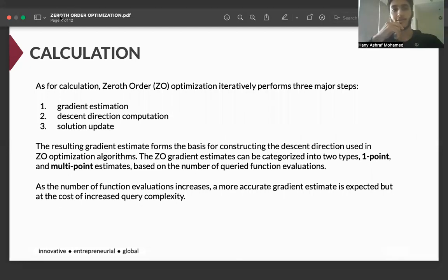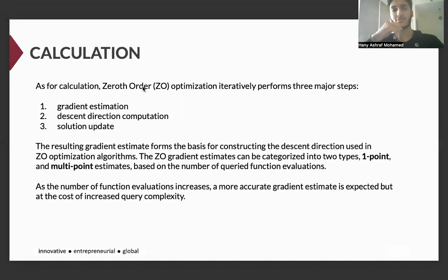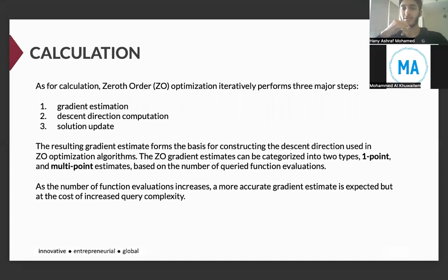Zero-order optimization iteratively performs three major steps. Number one, gradient estimation. Number two, descent direction computation. And three, solution update. The resulting gradient estimate forms the basis for constructing the descent direction used in zero-order optimization algorithms. The zero gradient estimates can be categorized into two types: one-point and multipoint estimates, based on the number of queried function evaluations.